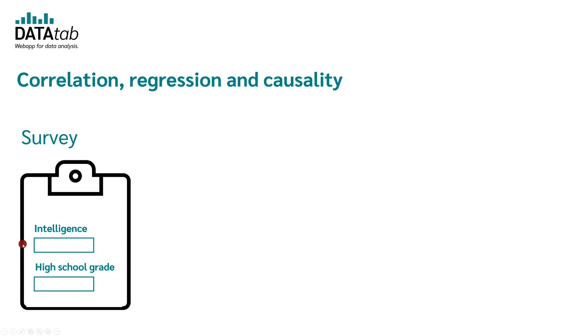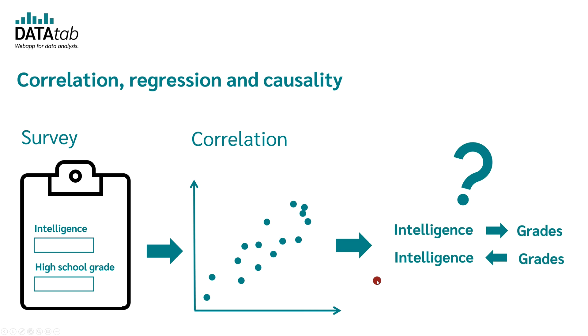After you've conducted your survey and you are analyzing your data, it will surely turn out that there is a correlation between intelligence and the high school grade. But now comes the big question mark. Is there a causal relationship?